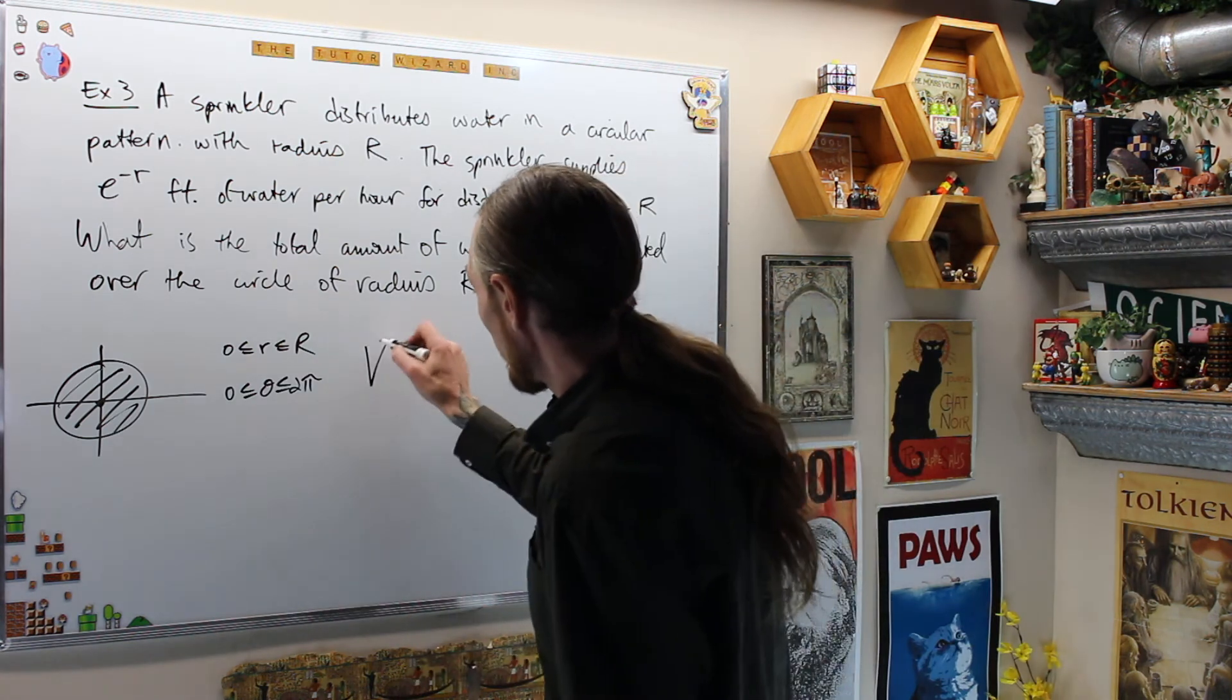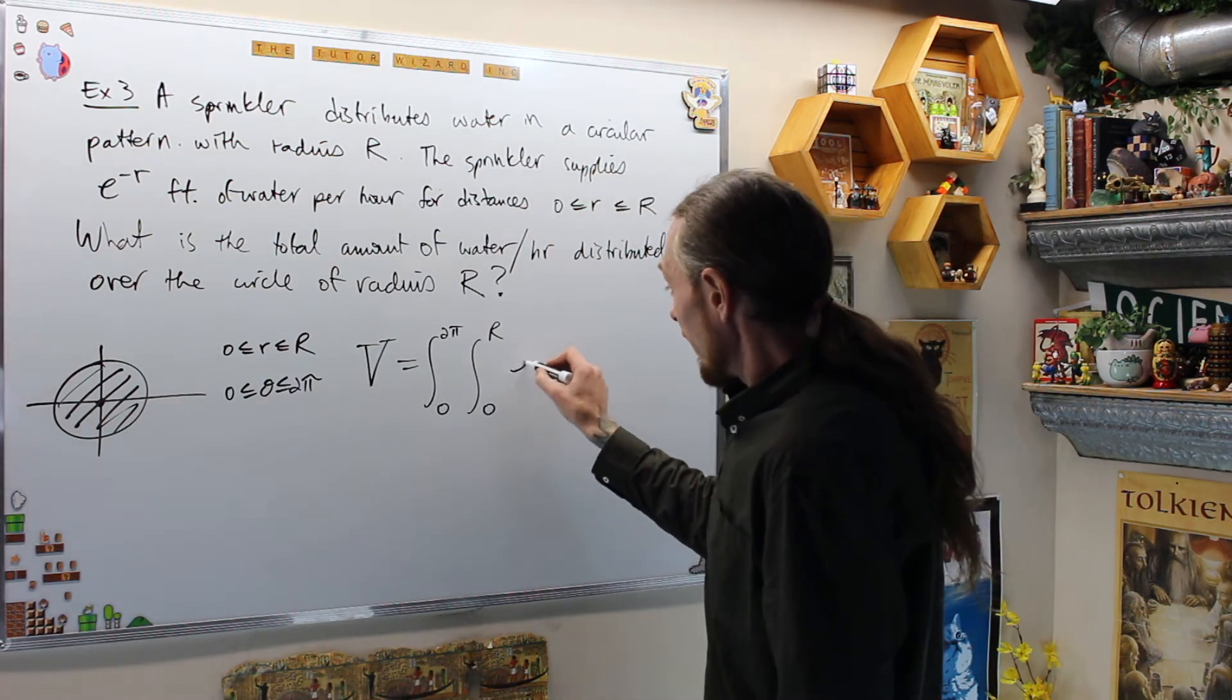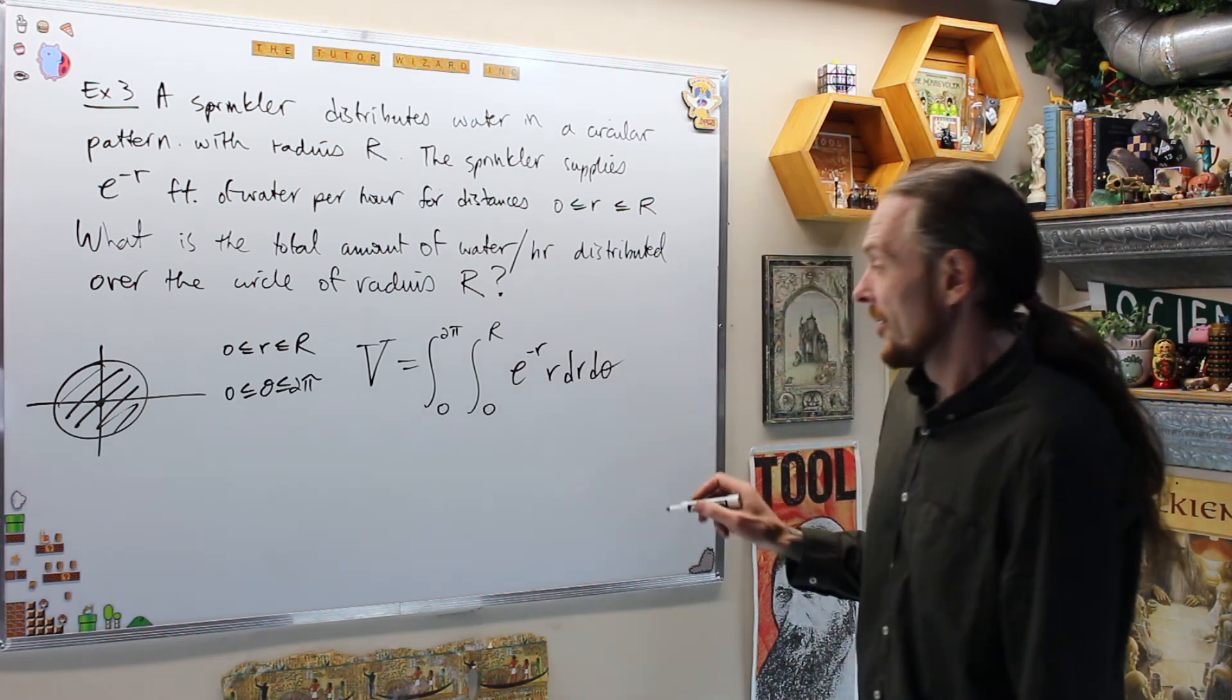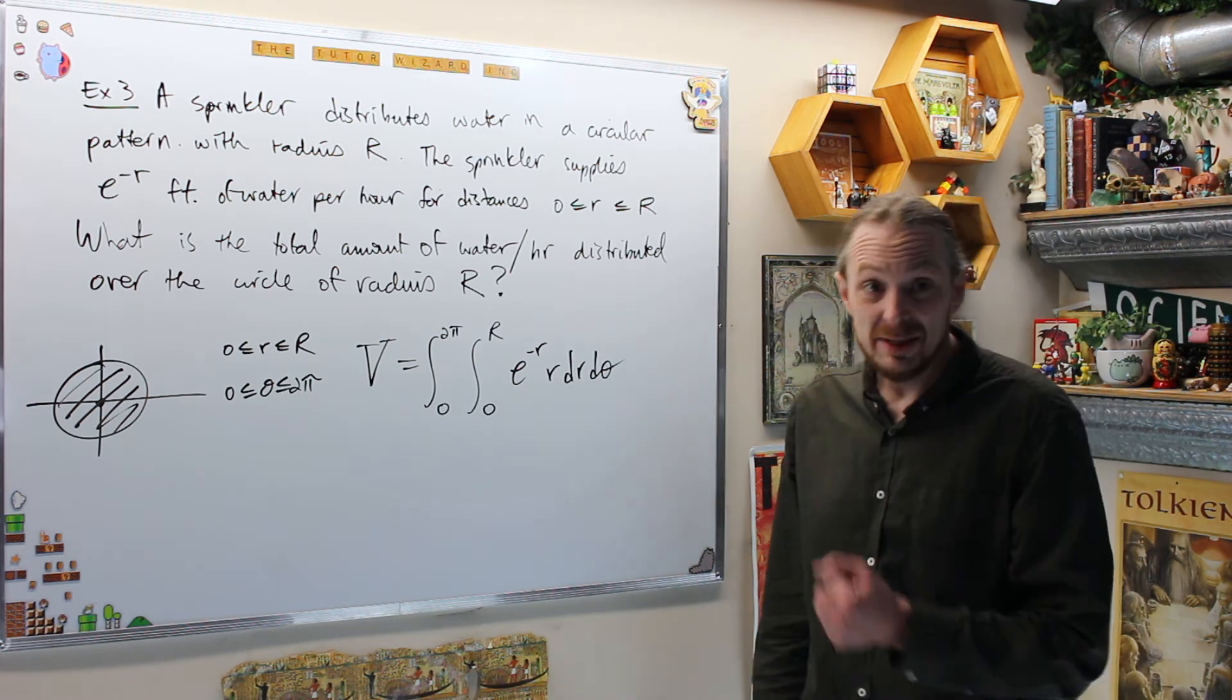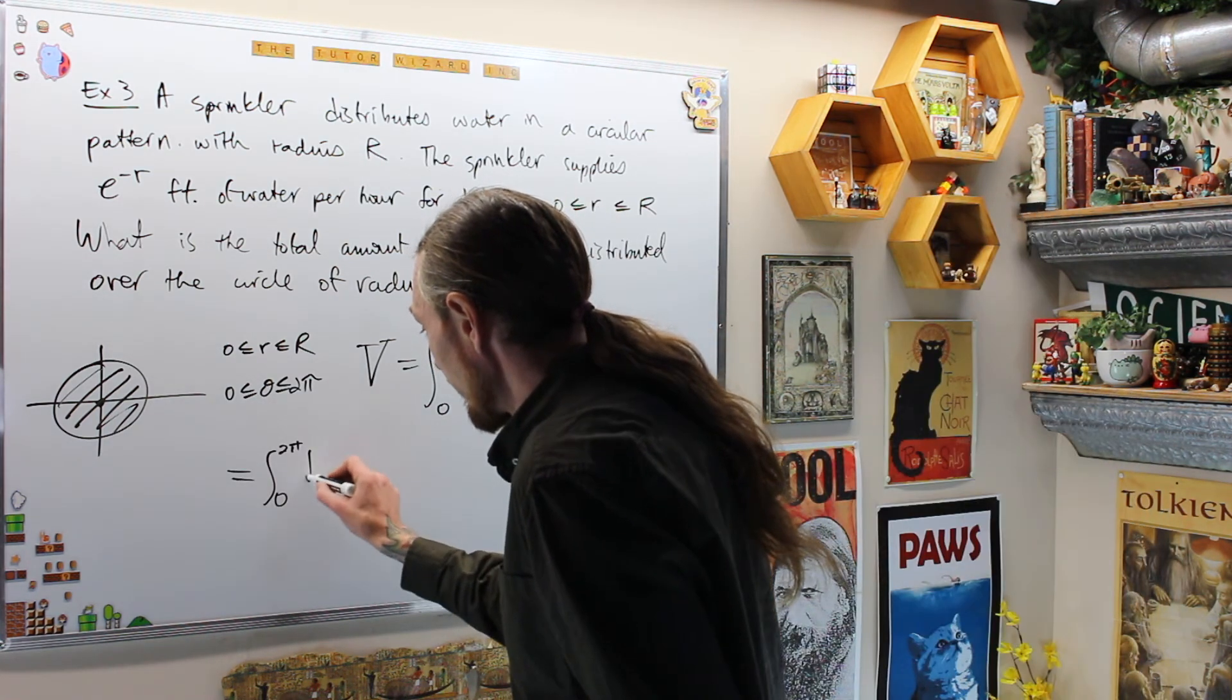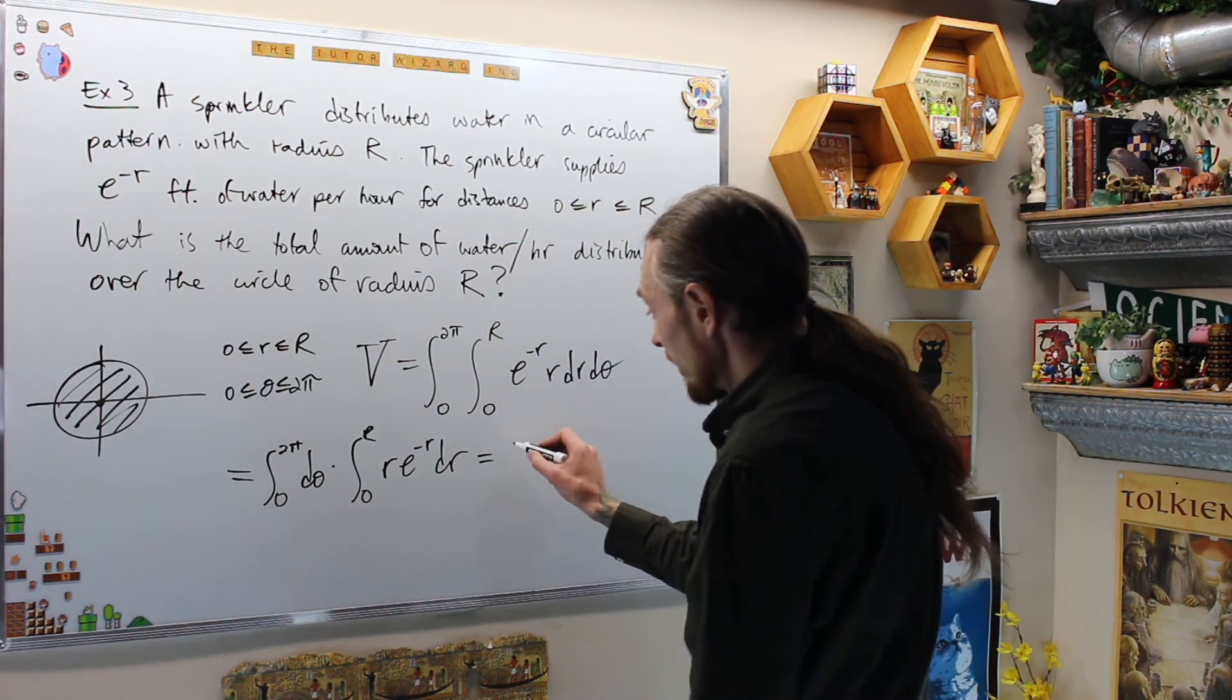And now I can view that as a double integral over a region. That says that the total volume of water is the double integral 0 to 2 pi. The integral from 0 to big R of e to the negative R, my function. And then now don't forget, we're going to have to use what? R, dr, d theta. Now I have a polynomial in R times a transcendental function in R, so I'm going to use integration by parts to solve this integral. I also notice I can separate them, which is often the case. This is equal to the integral from 0 to 2 pi of d theta times the integral from 0 to R of R e to the negative R dr. This is equal to the first one is equal to 2 pi.